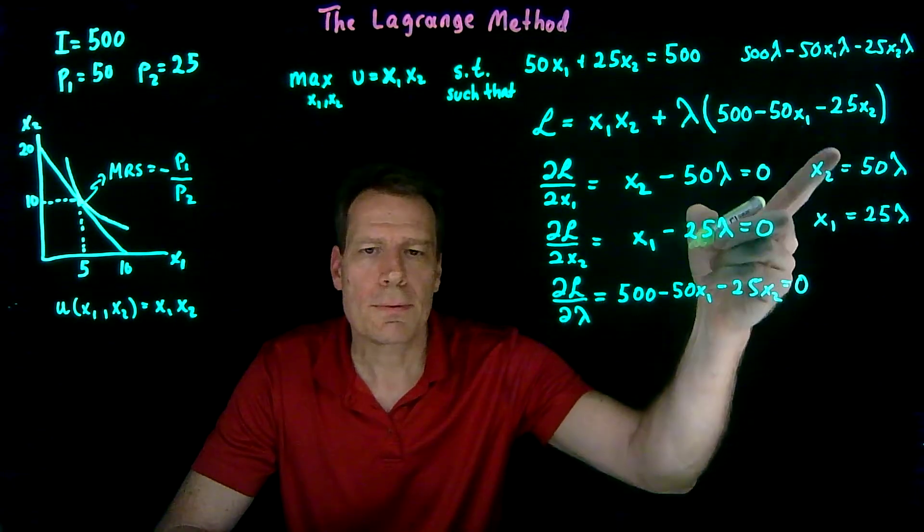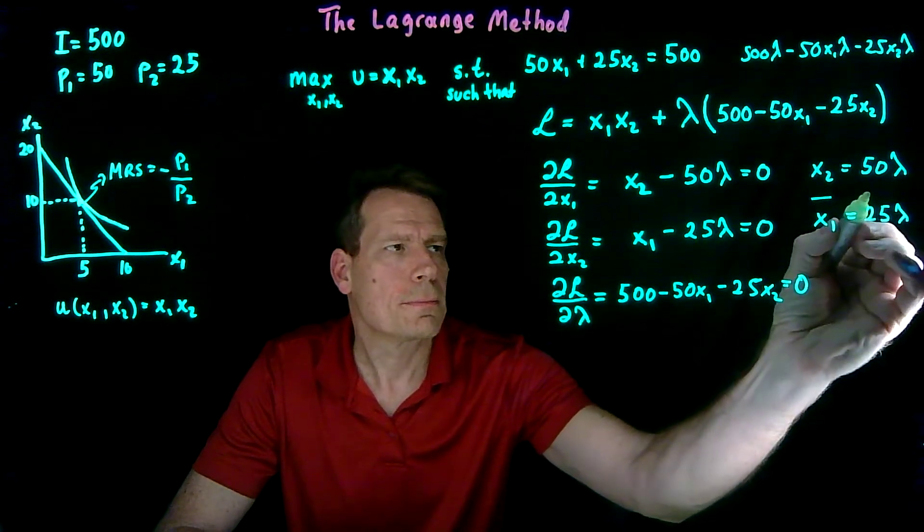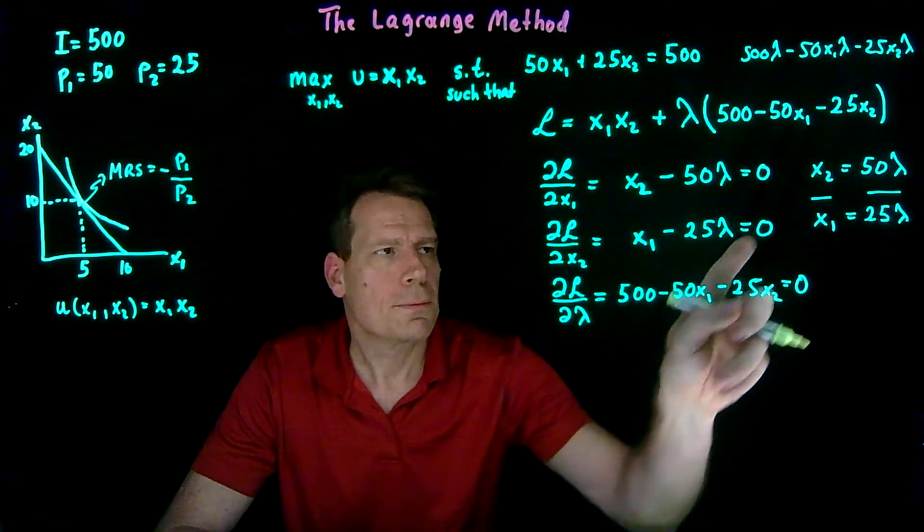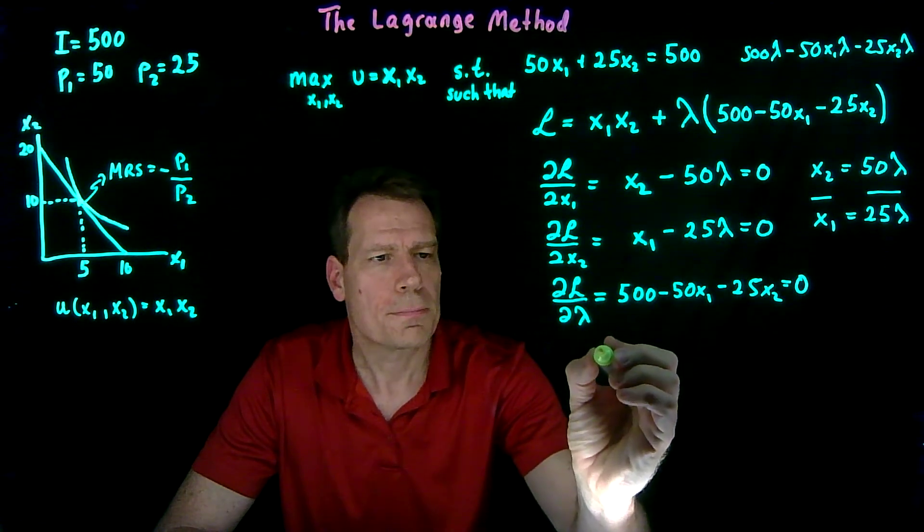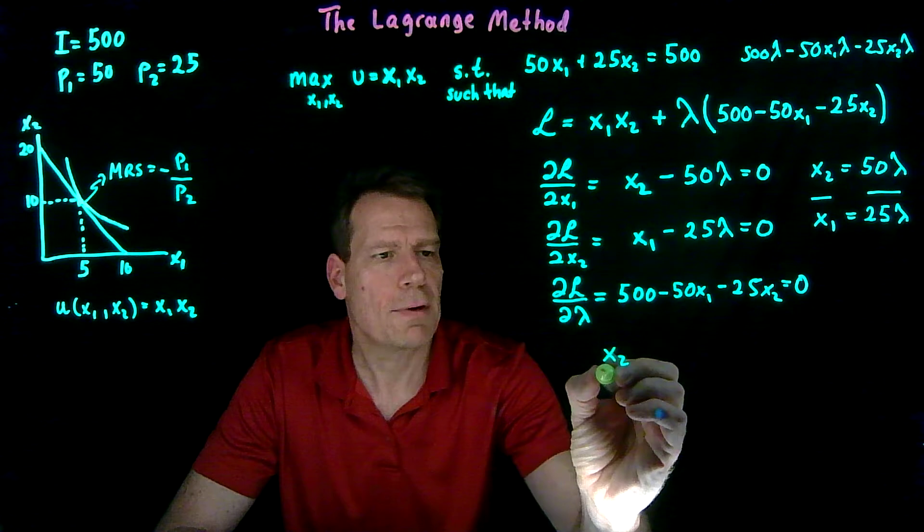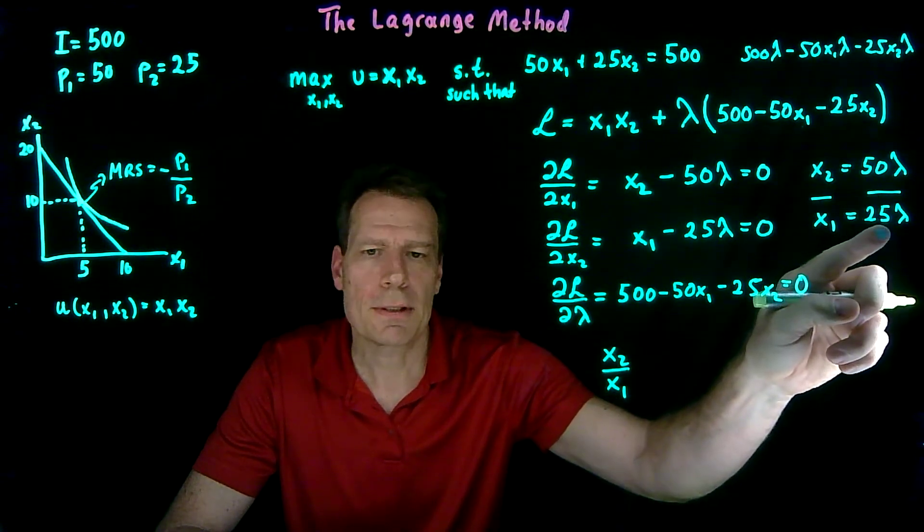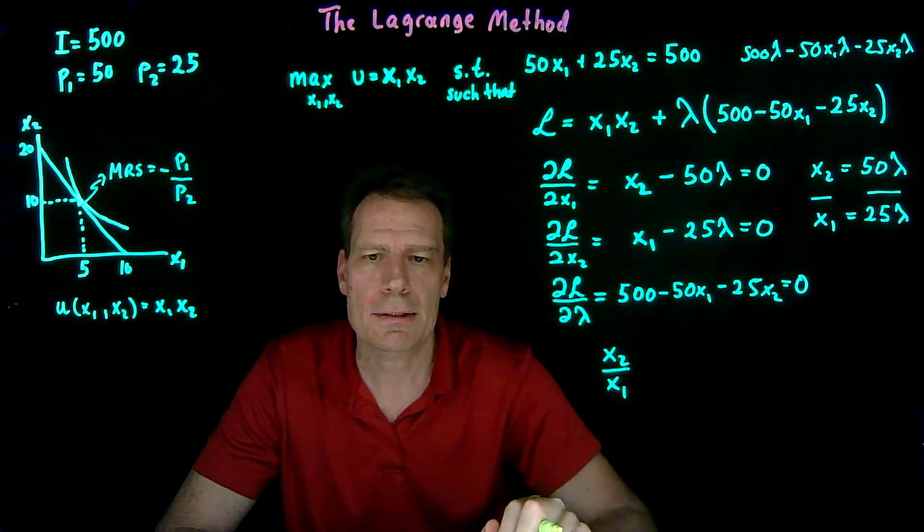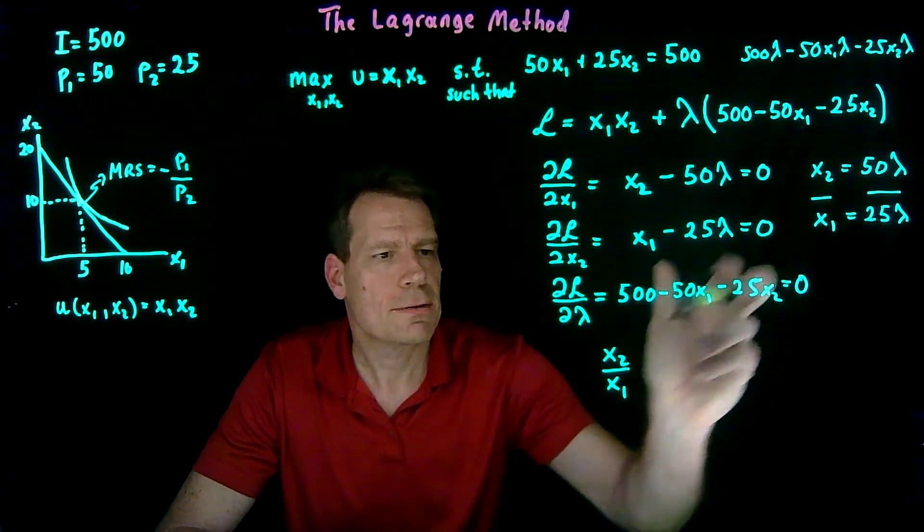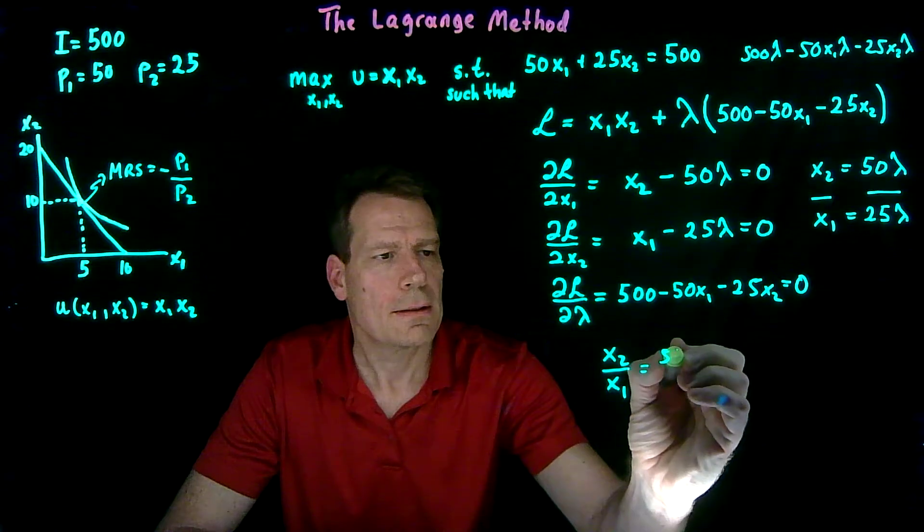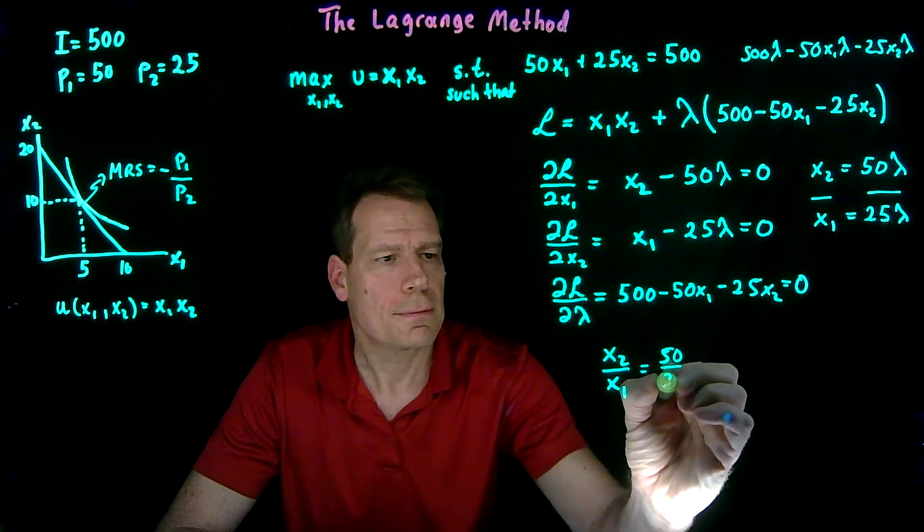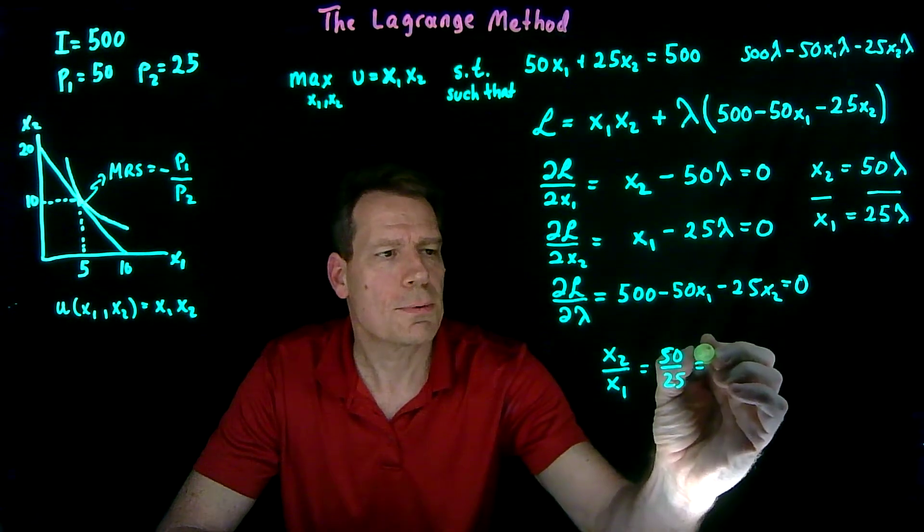Now we can divide these equations by each other. So we'll get x2 divided by x1 is equal to 50 divided by 25. The lambdas are just going to cancel. And 50 divided by 25 is just equal to 2.